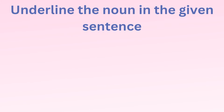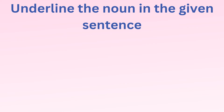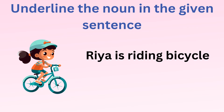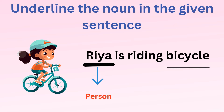Let's underline the noun in the given sentence. Ria is riding a bicycle. Here, Ria is a person, and bicycle is a thing.